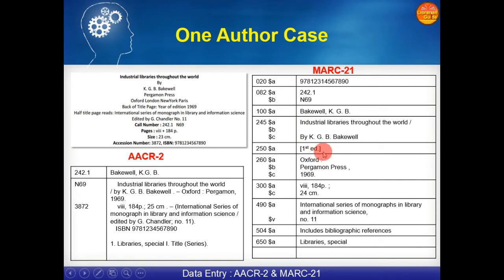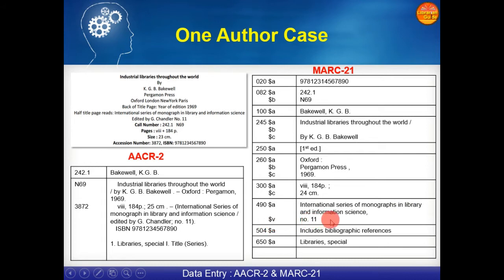The first edition detail is not mentioned in the catalogue as per AACR2 rule, but if you want to give it you can put it in square brackets. Then $250 $A $B $C — 260 $A $B $C: the name of place of publication, name of publisher, and year of publication — Oxford colon Pergamon Press and the year of publication. $300 $A: preliminary pages, number of pages, semicolon; $C: height of book. $490 $A: series name; $V: number of series. $504 $A: includes bibliographic references. $650 $A: the subject. This is the way to enter the detail of one book in MARC format and also to prepare the AACR2 card.